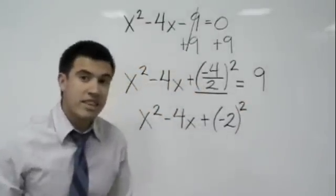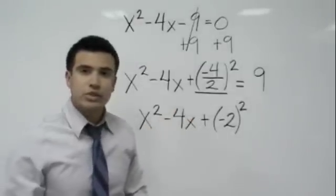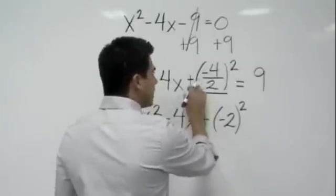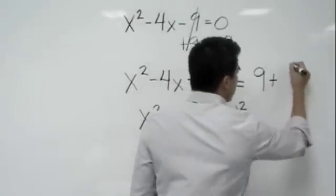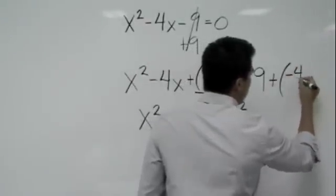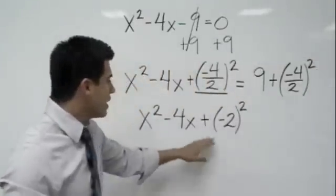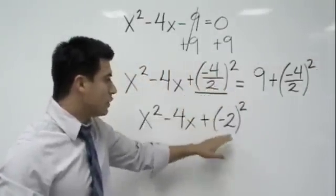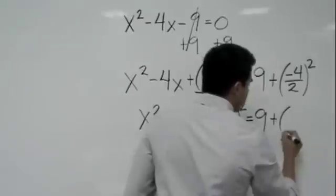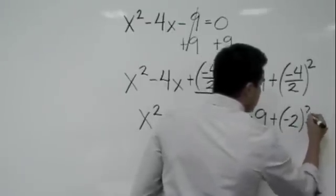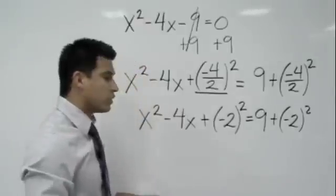Now here's the main thing that I want to show you guys. What you do to one side, you always have to do to the other. So if I added (-4/2)² here, I have to do it on this side. So I'll do (-4/2) and square it there. So now, -4 over 2 gives me (-2)², which equals 9 plus (-2)², because that's the same thing.